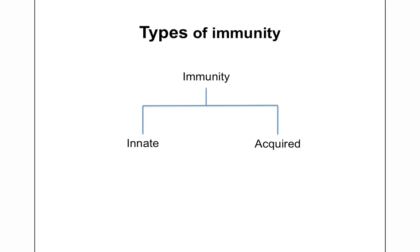There are two types of immunity: innate immunity and acquired immunity. In the previous lecture, we studied in detail about innate immunity, which is also called inborn immunity or native immunity. So today we will restrict ourselves to acquired immunity.